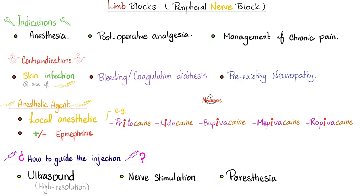When should I use peripheral nerve block? Anesthesia, post-operative analgesia, and for management of chronic pain. What are the freaking contraindications? If there is skin infection at the exact site that you intend to inject, bleeding or coagulation diathesis, pre-existing neuropathy before you started injecting anything. But what if the patient complained of loss of pain sensation after I injected the local anesthetic? Well, that's your freaking job. You did it, right? That's what local anesthetics do, doofus.